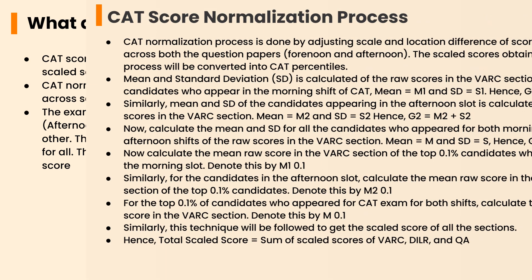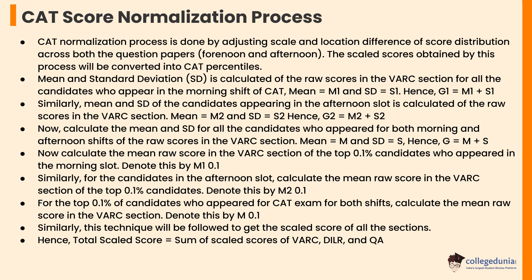Let's check the CAT score normalization process. CAT normalization is done by adjusting scale and location differences of score distribution across both question papers — forenoon and afternoon. The scaled score obtained by this process will be converted into CAT percentiles. The mean and standard deviation of the raw scores in the VARC section are calculated for all candidates who appear in the morning shift, where mean = M1 and standard deviation = S1. Hence, G1 = M1 + S1.